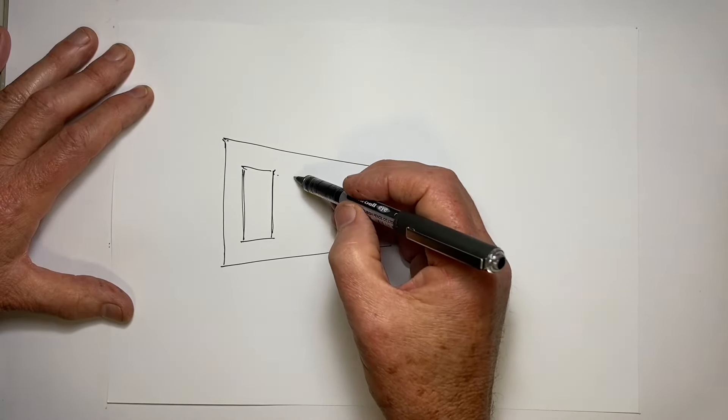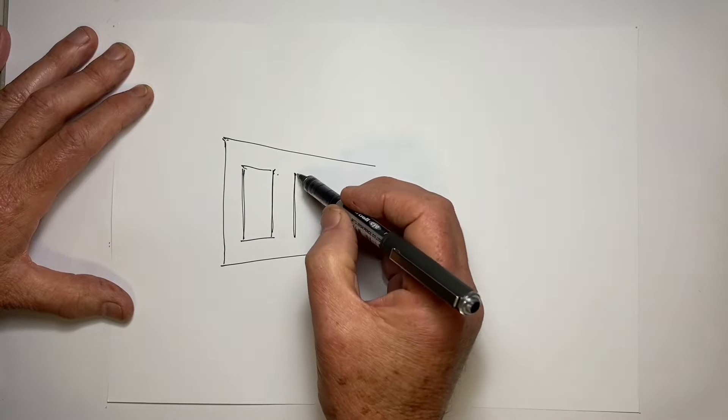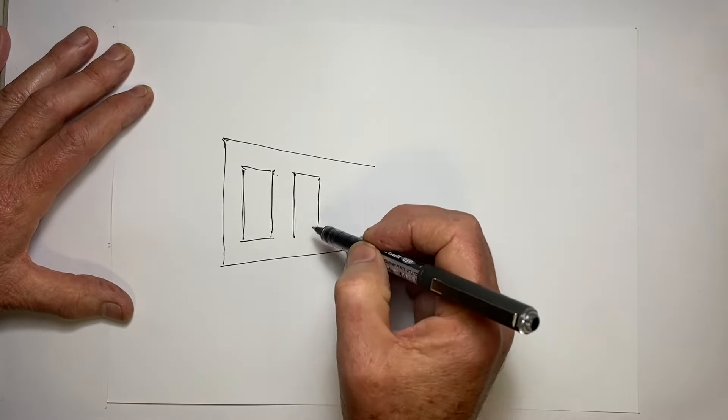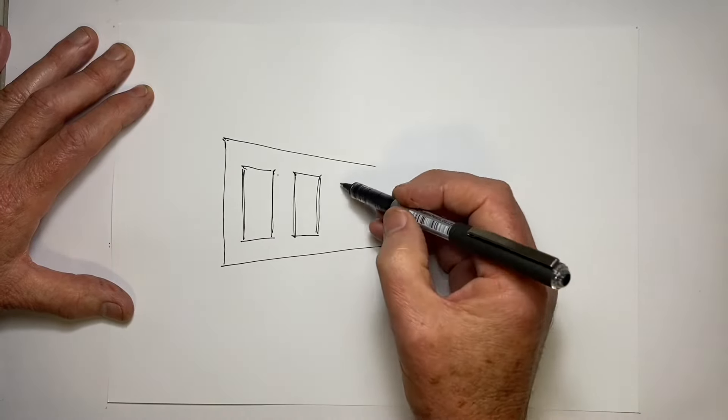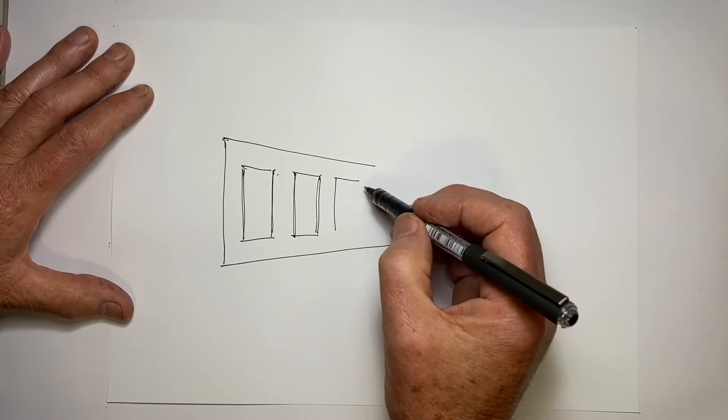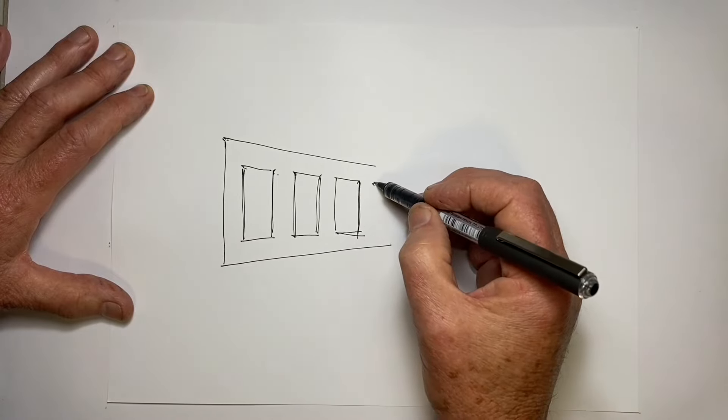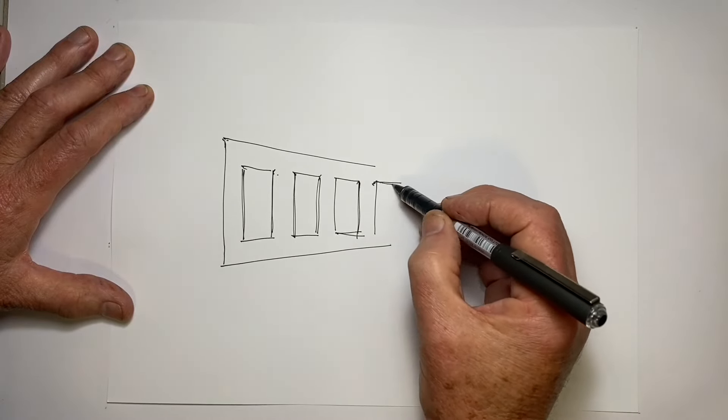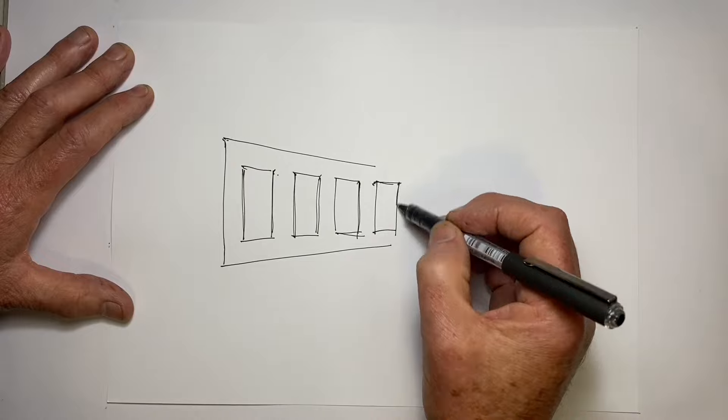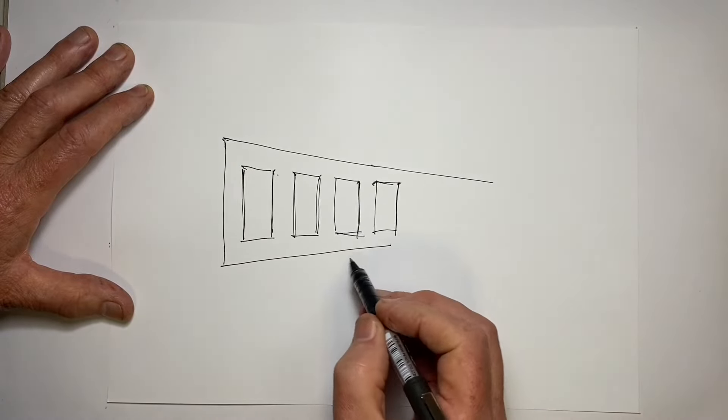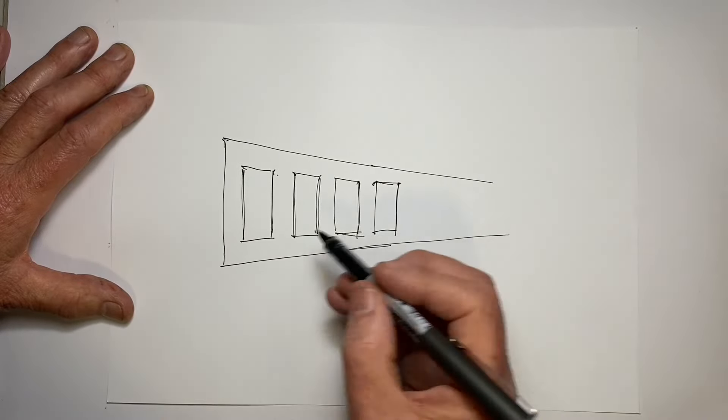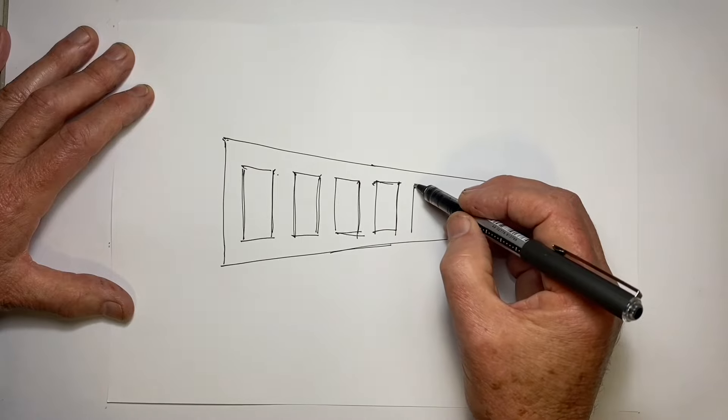The windows need to fit into these perspective lines as well. You do know about foreshortening - there's meant to be some sort of visual compression as things move further away from us. Because the side of this building is sloping away from us, there needs to be some sort of visual compression, some sort of narrowing of the things we see.